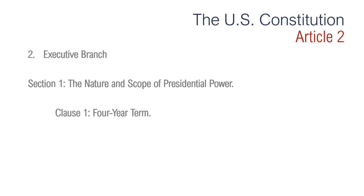Section 1 has to do with the nature and scope of presidential power. Clause 1 has to do with the four-year term. It says the executive power shall be vested in the president of the United States of America. He shall hold his office during the term of four years, and together with the vice president, chosen for the same term, be elected as follows. The president has power to carry out laws made by Congress — called the executive power — and serves for a four-year term. The 22nd Amendment limits the number of times a person may be elected president to two terms.